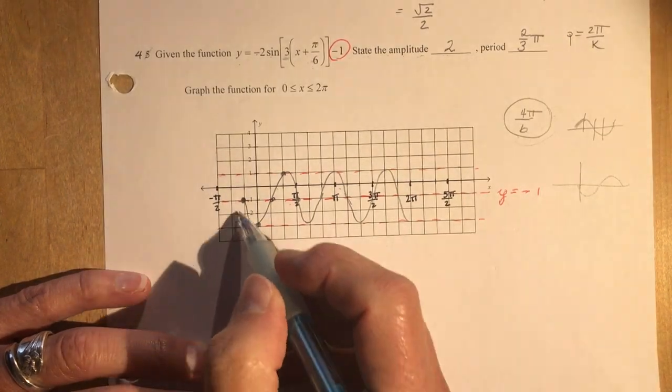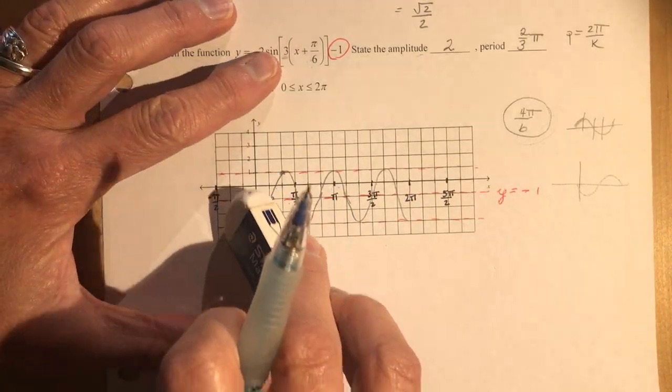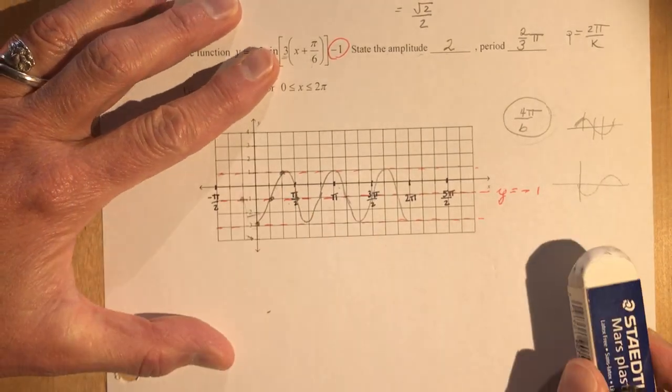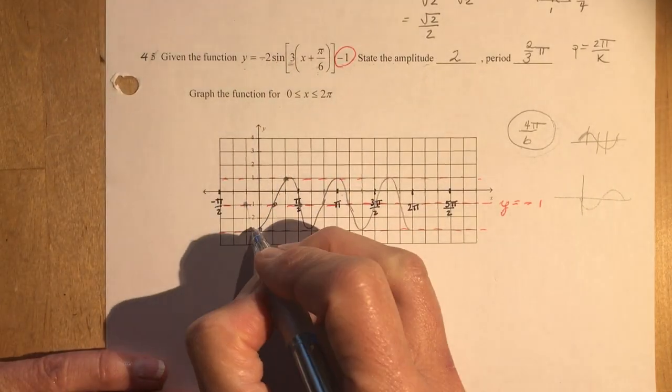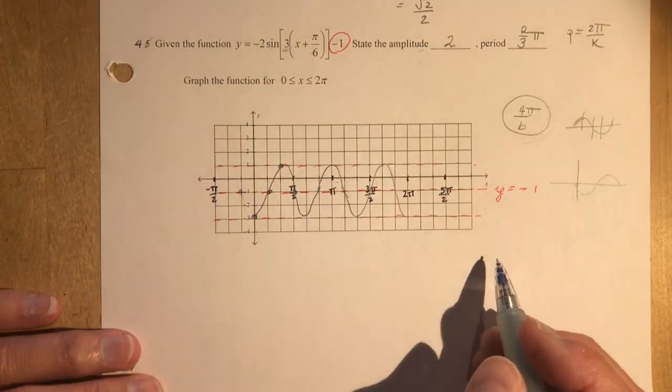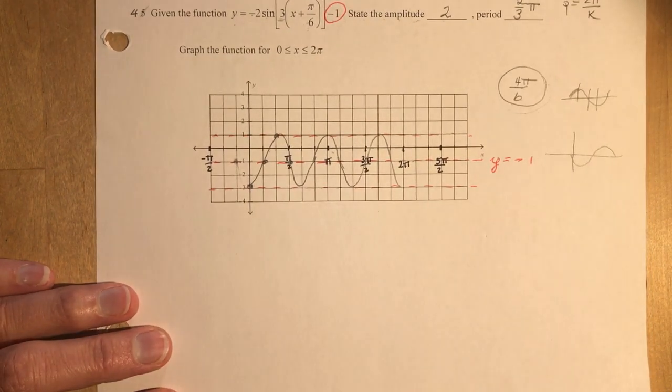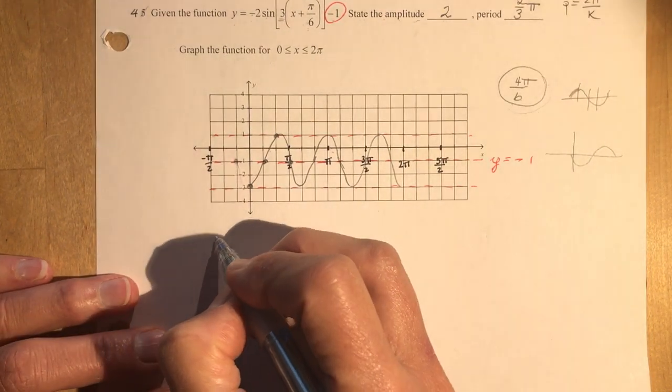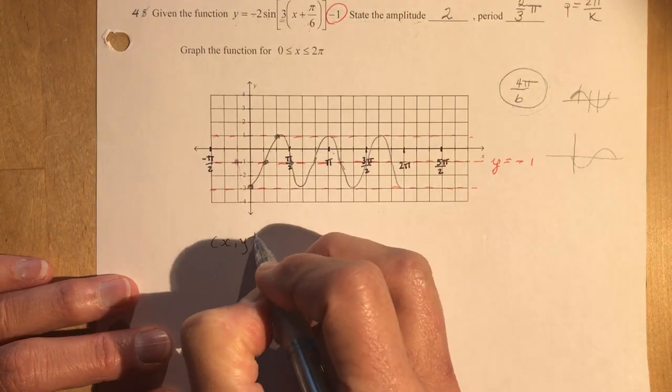So now you wouldn't have to put this part in if your teacher gets really picky about it to say, well, I only asked you from 0 to 2 pi. So there's 0 to 2 pi. Now the other way you could do it, of course, would be to use some key points. So in that case, we would write out the mapping rule.